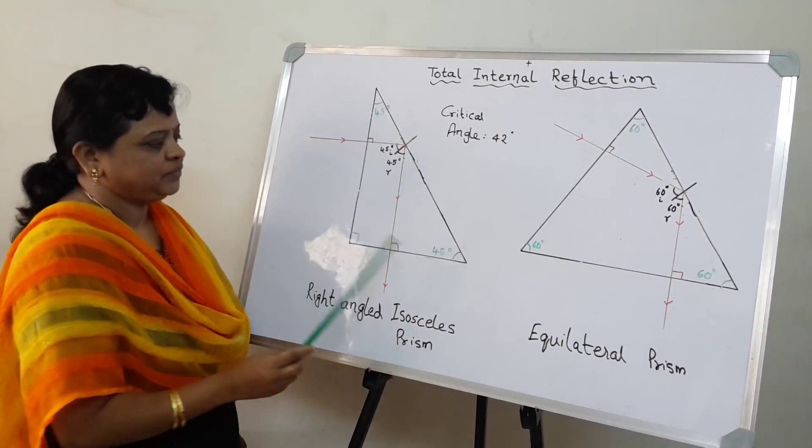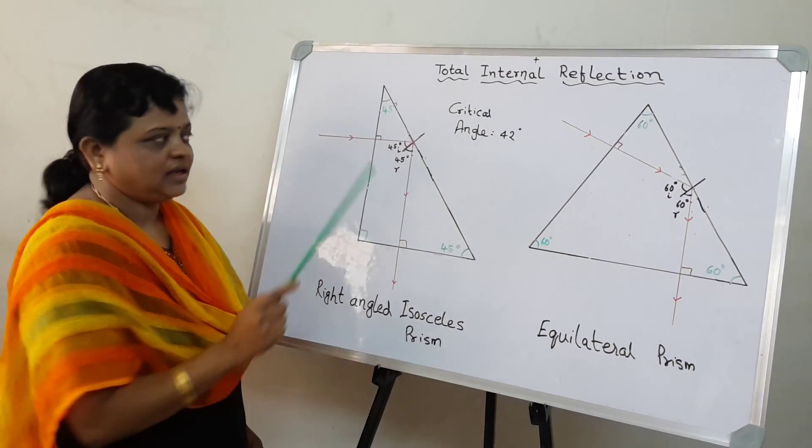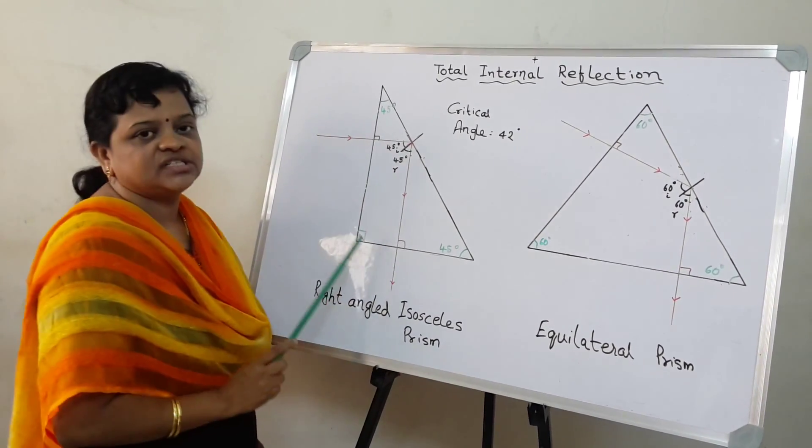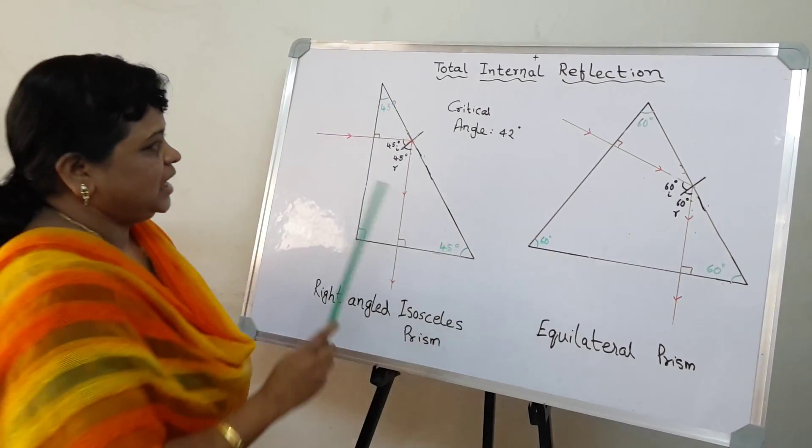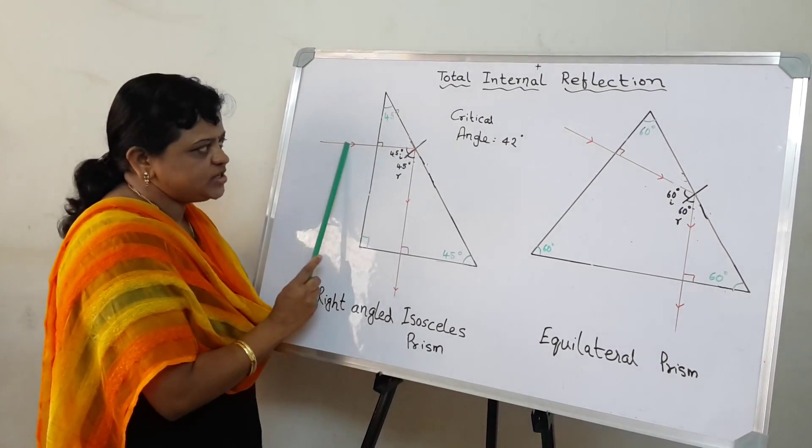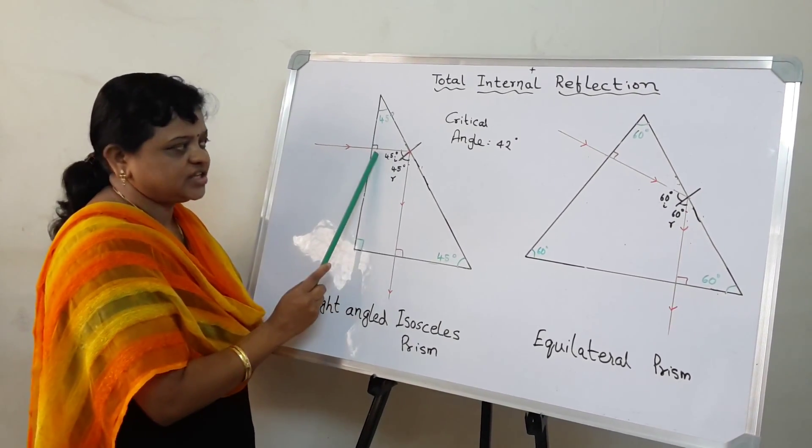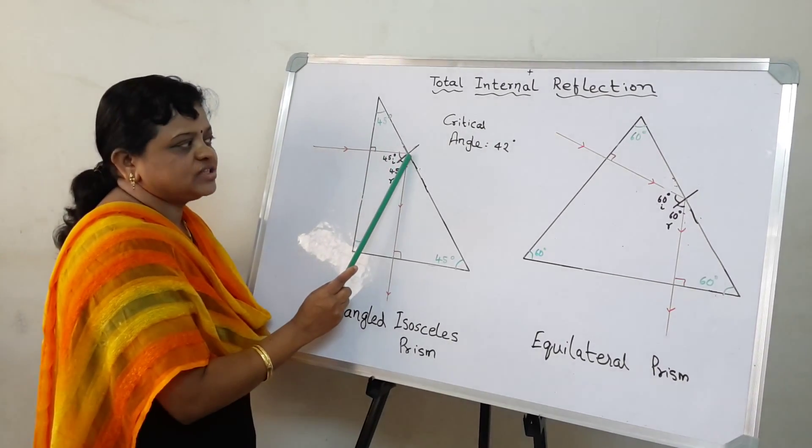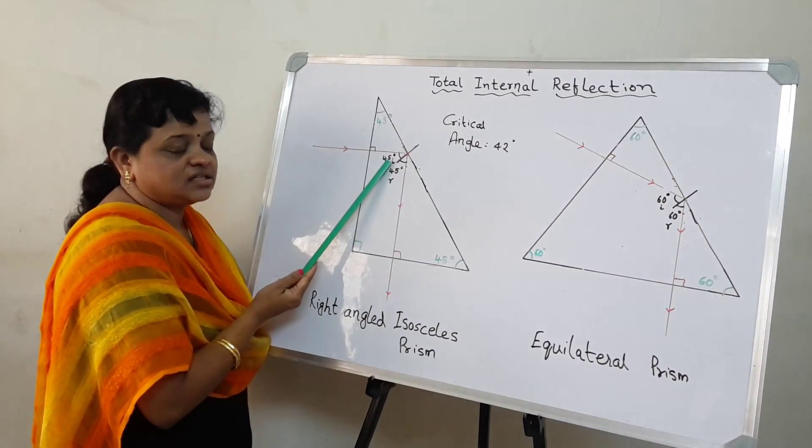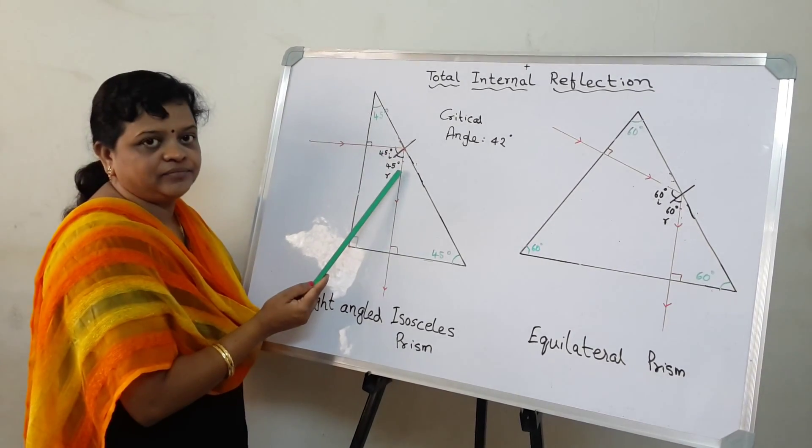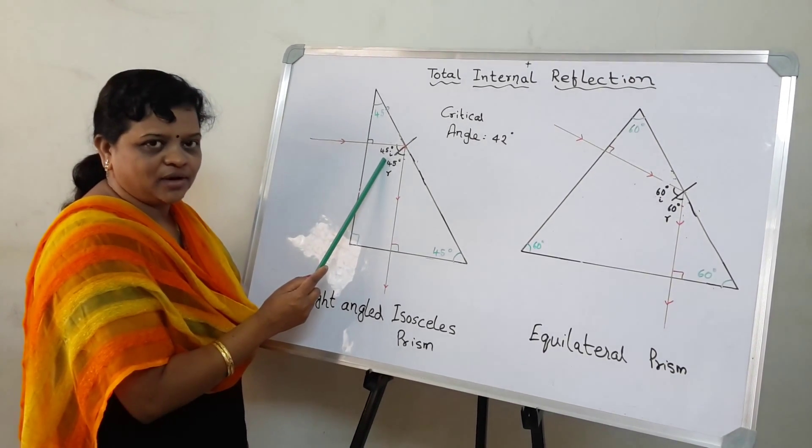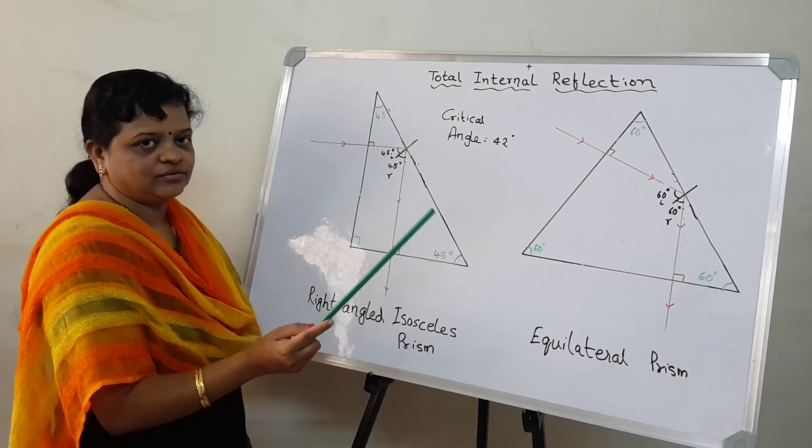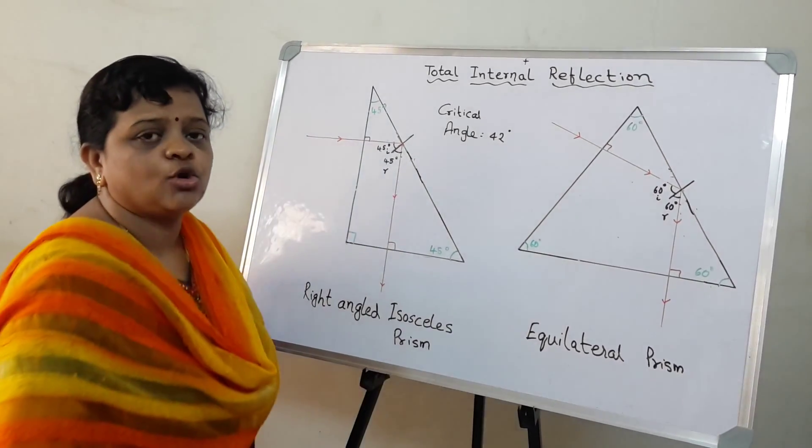Now for example, let's take the first one, the right-angled isosceles prism. The ray should always be chosen in such a way that it should pass undeviated through the first surface. But when it goes to the second surface, you can see that it is deviating here. In other words, the angle of incidence is 45 degrees. How did this come about? Simple reason, just the concepts of triangles.